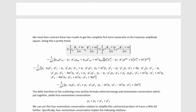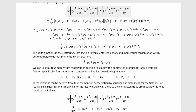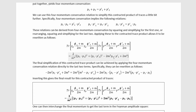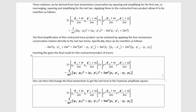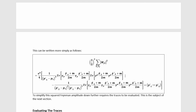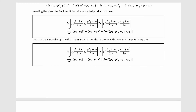We can then contract the two traces and compute that product. Further simplification is possible using momentum conservation: squaring and rearranging momentum conservation in two different ways yields three useful relations, which we use to simplify the contracted expression. We then apply momentum conservation directly to the last two terms to simplify their sum, inserting that to get the final result for this piece. The analogous term with reversed external momenta is obtained by performing that momentum interchange.